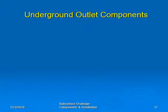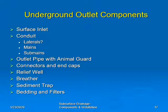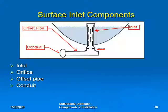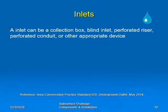Now that we have listed the components of a subsurface drainage system, let's consider the components of an underground outlet. The surface inlet is the component of an underground outlet system that differs from a subsurface drainage system. The underground outlet inlet consists of the inlet, an orifice plate if needed, an offset pipe if needed, and the conduit that provides the outlet for the underground outlet. An inlet can be a collection box, lined inlet, perforated riser, perforated conduit, or other appropriate device.